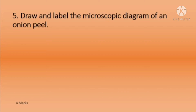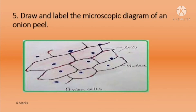Fifth question: draw and label the microscopic diagram of an onion peel. When you observe an onion peel through a compound microscope, you can see a diagram similar to a brick wall pattern. You can label the cells and nucleus — all of these are onion cells. You can observe them appearing as a light pink color.